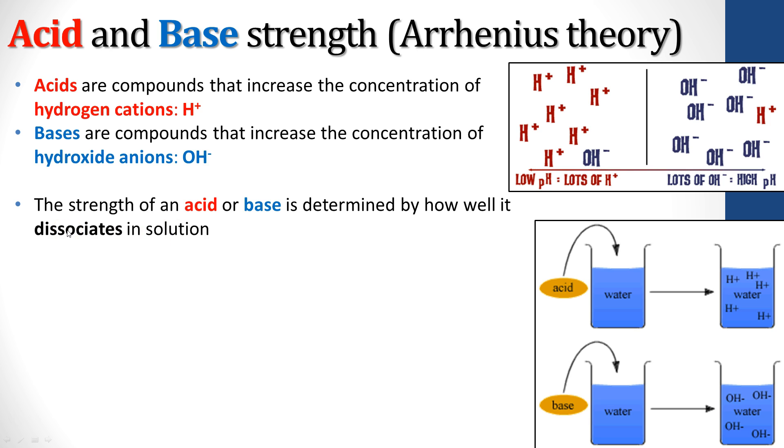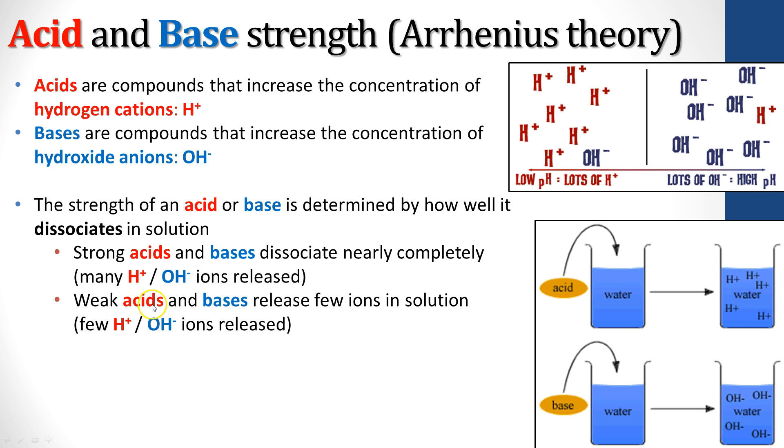The strength of an acid or a base, if we say it's a strong acid or a strong base, is determined by how well it dissociates in solution. Strong acids and bases dissociate nearly completely. A lot of hydrogen cations or hydroxide ions released into solution. A weak acid, on the other hand, releases very few. So it's like we were talking about before with the electrolytes. A strong one dissociates completely, a weak one dissociates not quite as much. A strong acid, very big in releasing all these hydrogen cations. A strong base, lots and lots of hydroxide anions. And if they're weak, not a lot of those are released when you dissolve them into solution.